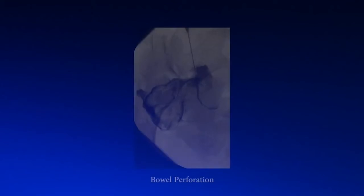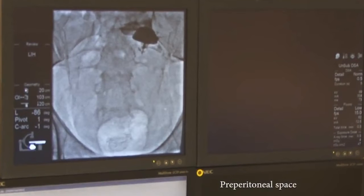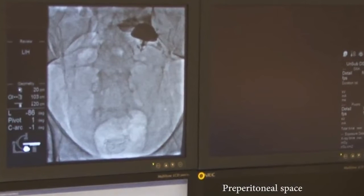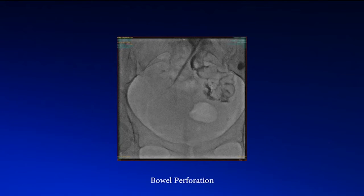An irregular or striated appearance of injected contrast may indicate that the needle tip is inappropriately located in the bowel mesentery, greater omentum, preperitoneal space, or rectus abdominis muscle. If contrast is identified within the bowel loops, this may indicate bowel perforation.